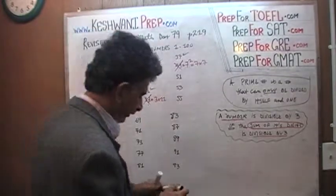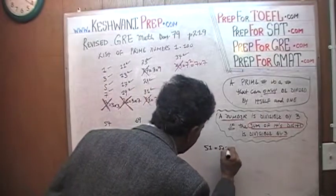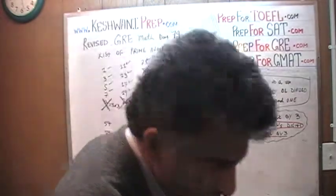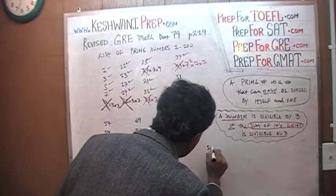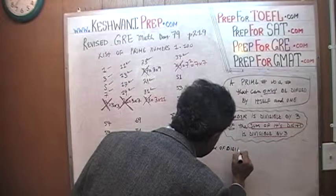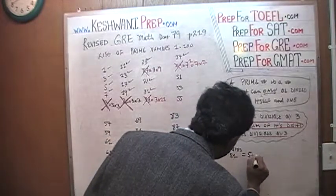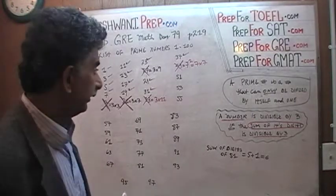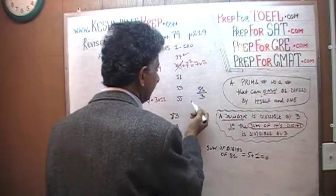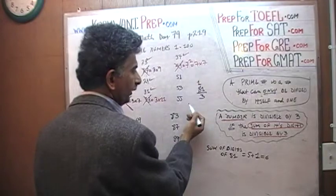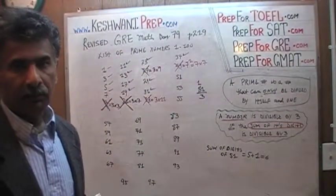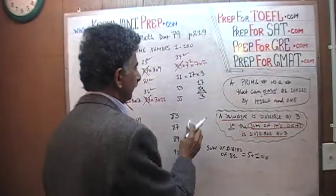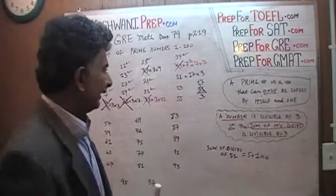For example, here we are looking at 51. The sum of the digits of 51 is 5 plus 1, which equals 6. And since we can divide 6 by 3, 51 is divisible by 3. If you divide 51 by 3: how many 3's in a 5? One 3, with 2 remaining. The remaining 2 joins the next digit to become 21, and 21 divided by 3 is 7. Which means 51 equals 17 times 3 — it is not a prime number, despite how it looks.